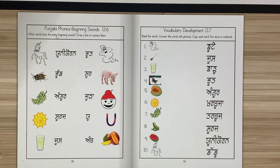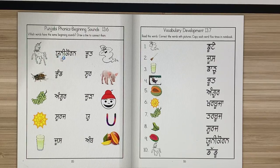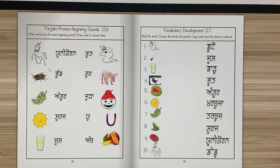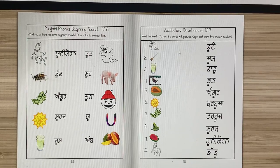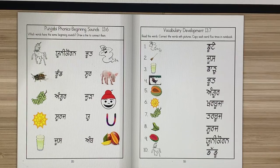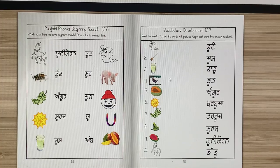Now here is the phonics page — you're going to look at the beginning sound. The beginning sound is 'U'. Find the U sound here, and join it with the line. Now here are your ten vocabulary words — same vocabulary words, same pictures. You will connect the words with the picture. So 'chute' — chute is here.